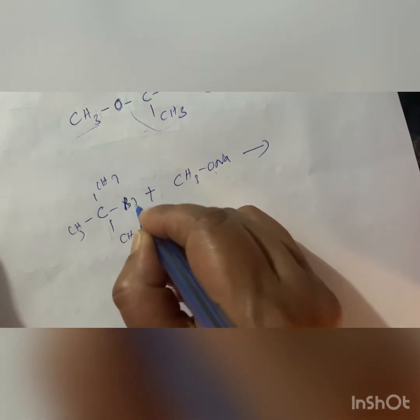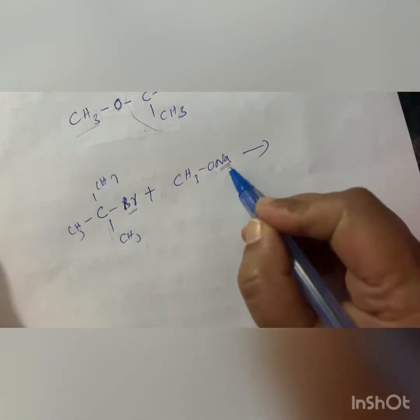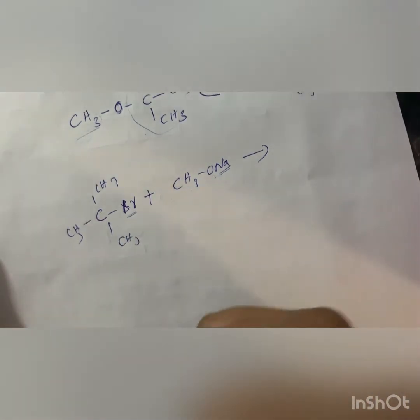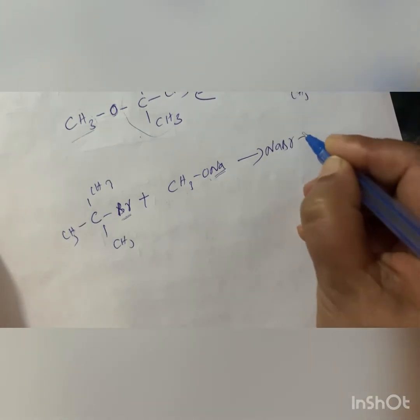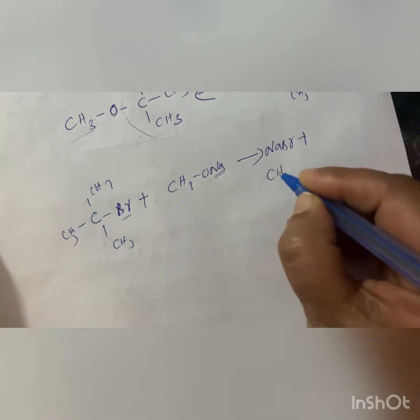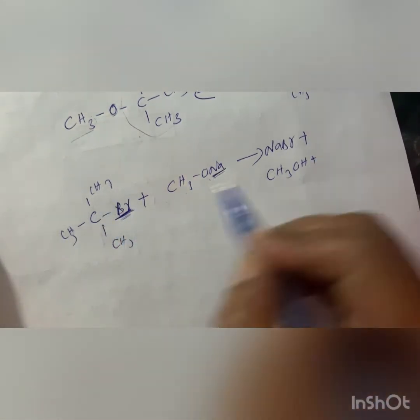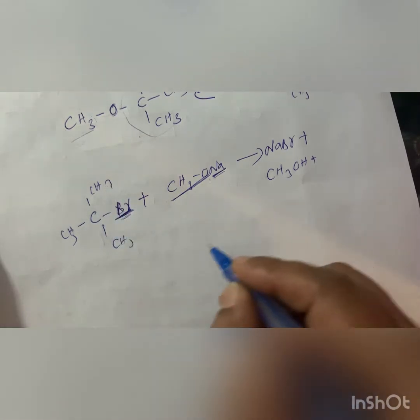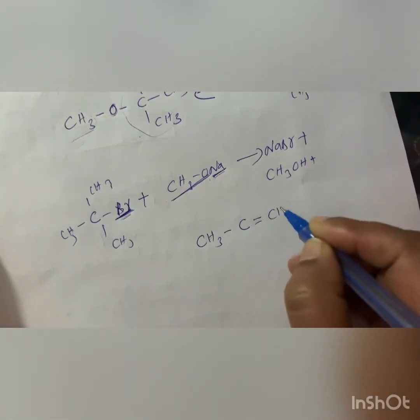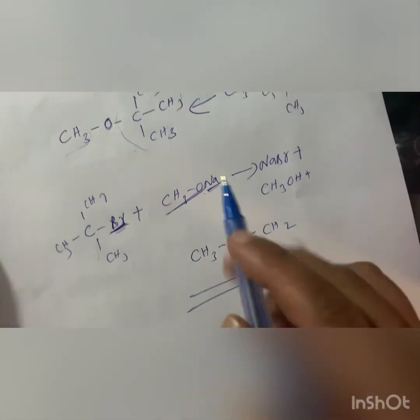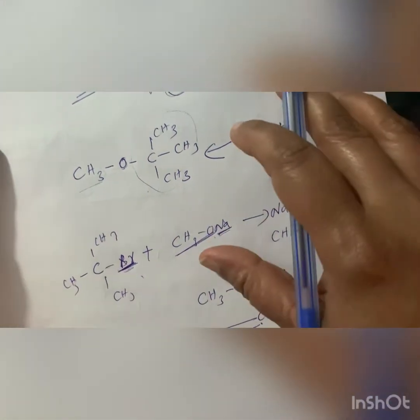If you use tertiary RX with, say, Br as the halide, then NaBr is eliminated along with CH₃OH. A hydrogen is removed from the carbon chain, and the main product is an alkene such as CH₃C=CHCH₃, not an ether. So if you take the wrong combination, you get alkene as the main product instead of ether — that is the drawback of Williamson's synthesis.